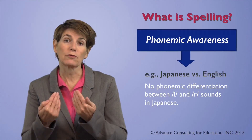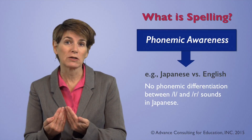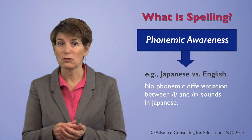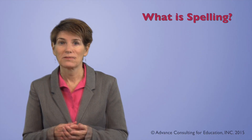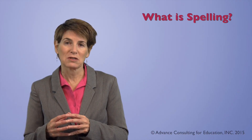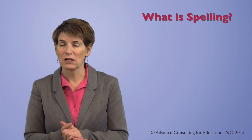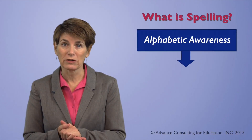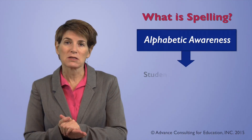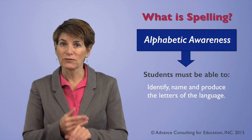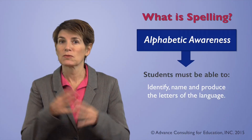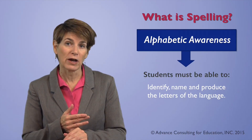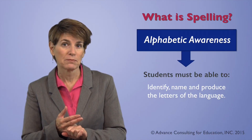So phonemic awareness is the first step in order to be able to spell in English. The next piece that students need to know is alphabet awareness, or alphabetic awareness. This means that students can identify the different letters — we know there are 26 letters in English — so students can identify them and name them.